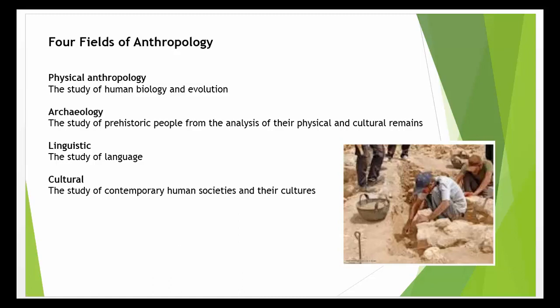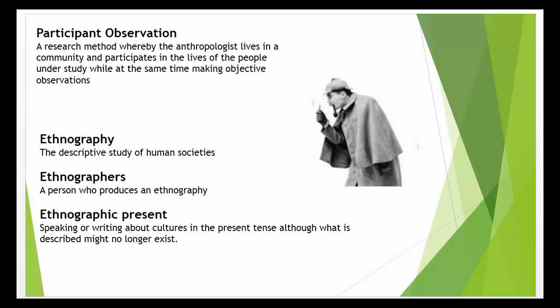The holistic approach requires that societies be studied over long periods of time, during which the investigator lives within the community and participates in the lives of the people under study — a technique known as participant observation. The final product is an ethnography, a descriptive study of a human society.